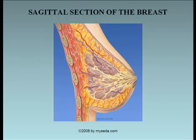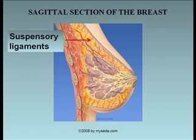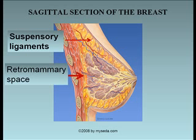The suspensory ligament anchors the skin and the gland to the deep fascia — that is, the fascia of the pectoral muscle, called the pectoralis fascia. The suspensory ligament is well developed in the superior part of the breast. The breast is separated from the pectoralis fascia by a loose connective tissue plane, which we call the retromammary space. This retromammary space allows the breast to move to some degree on the pectoralis fascia.